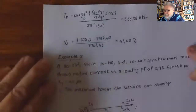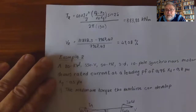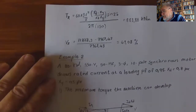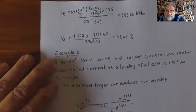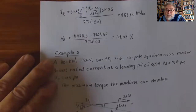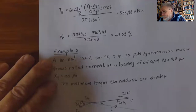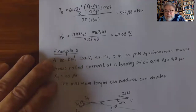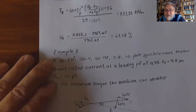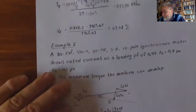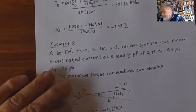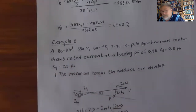The reluctance torque is: T = 60 × 3V²/2 · (Xd − Xq)/(Xd·Xq) · sin(2δ) / (2π·ns), giving 883.88 kN·m. Voltage regulation = (11,878.3 − 7,967.43) / 7,967.43 = 49.08%.